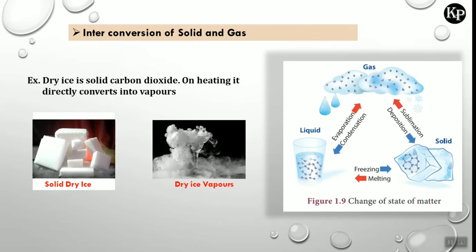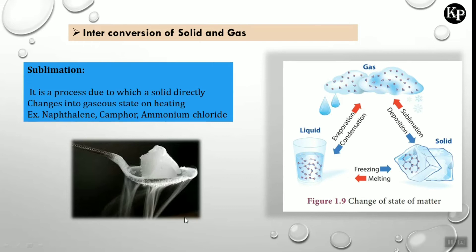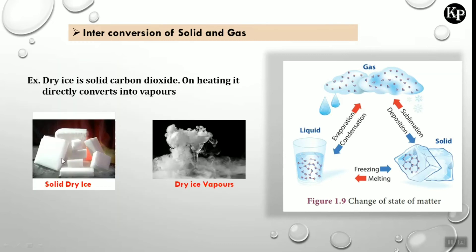The third inter-conversion is solid and gas. For example, dry ice is solid carbon dioxide; on heating it directly converts into vapors. Sublimation is the process by which a solid directly changes into the gaseous state on heating, without passing through the liquid state. An example is solid dry ice, which directly converts to carbon dioxide vapors.